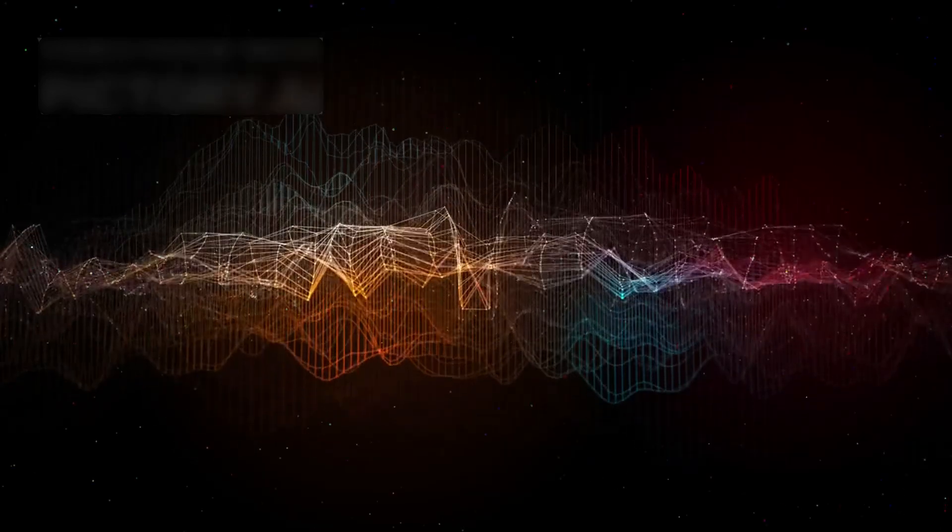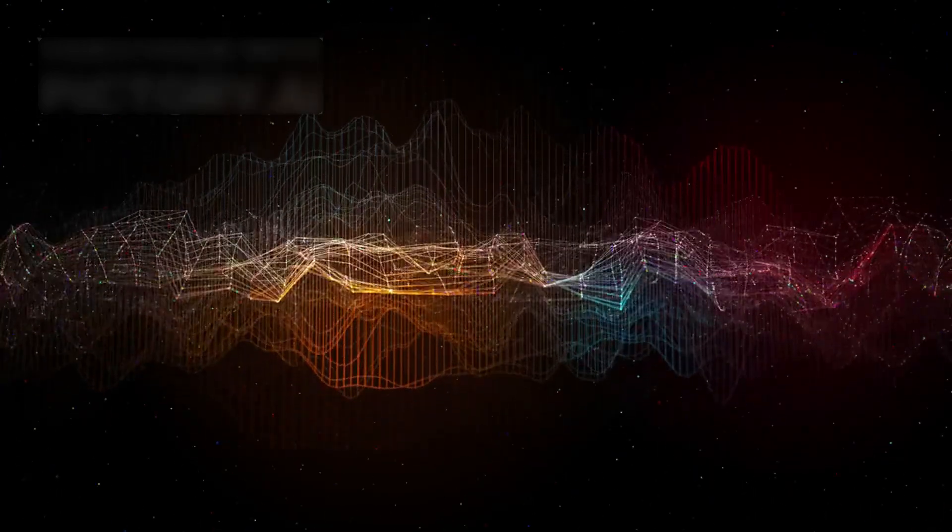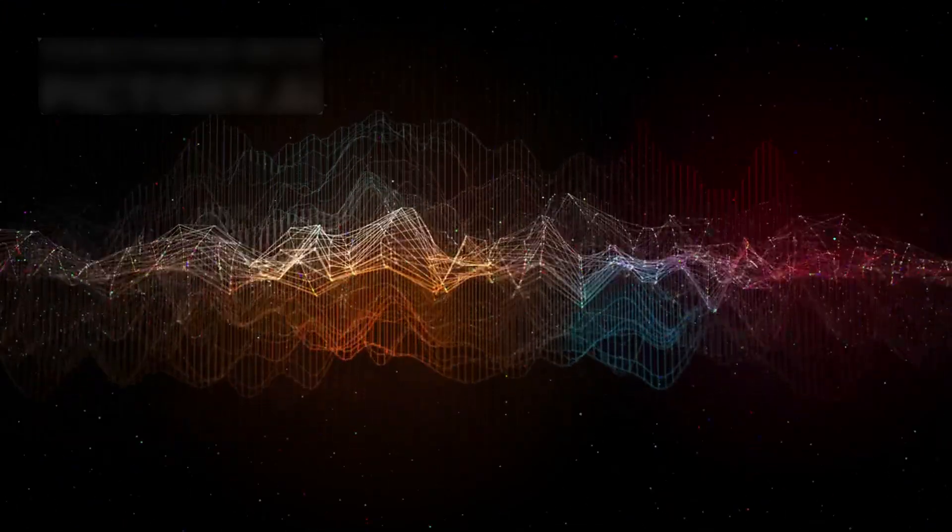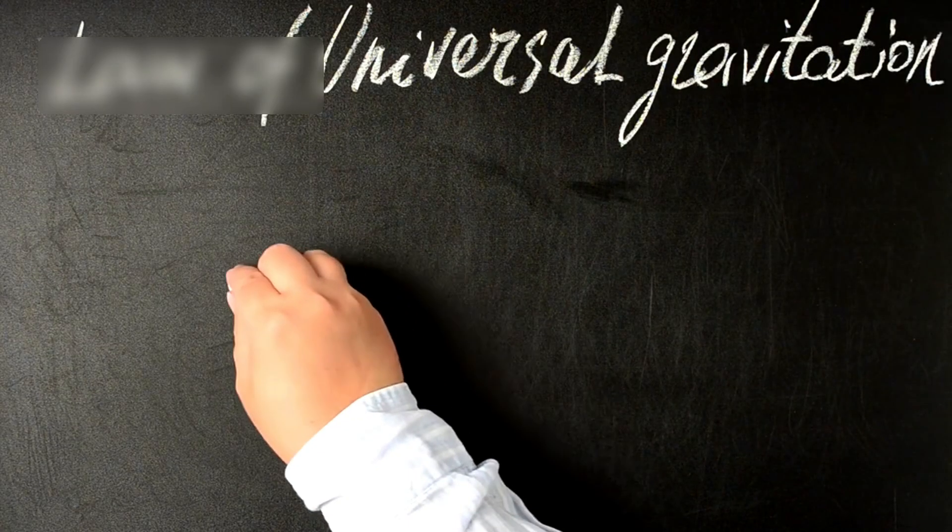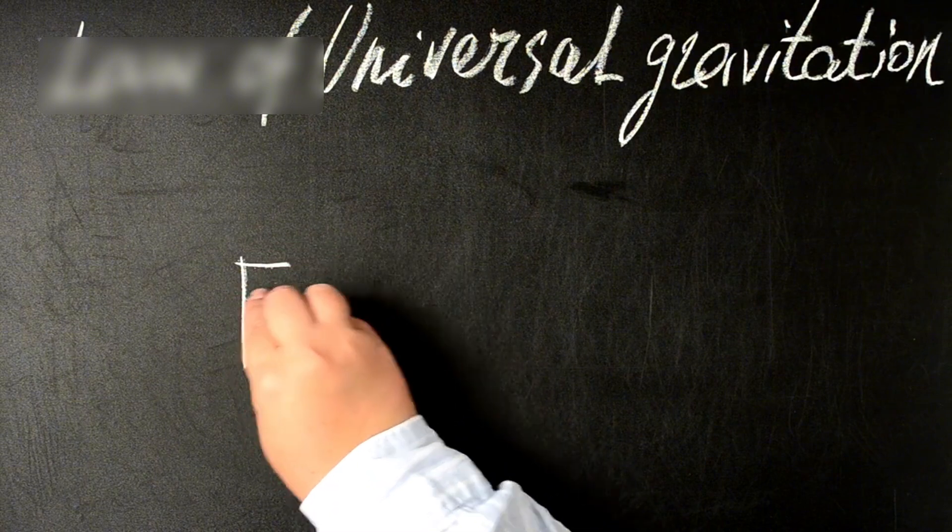It hinted Voyager was moving through regions where the fabric of space-time warped. This wasn't mere aging of instruments but hints of variable dimensional space. A theory once confined to chalkboards had become real in Voyager's lonely region.